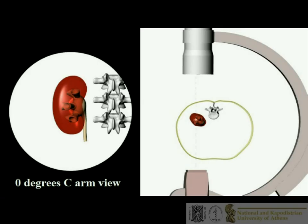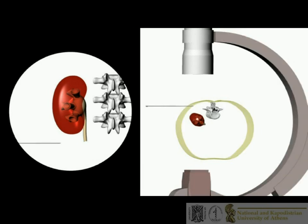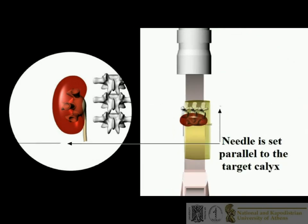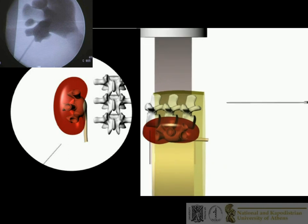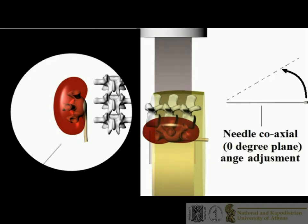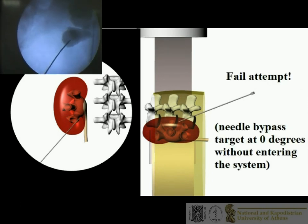Monoplanar fluoroscopic axis: in the monoplanar fluoroscopic technique, the needle is placed over the patient's skin and oriented parallel to the infundibular axis of the target calyx. The needle is then angulated towards the target based on the surgeon's experience and advanced towards the calyx.